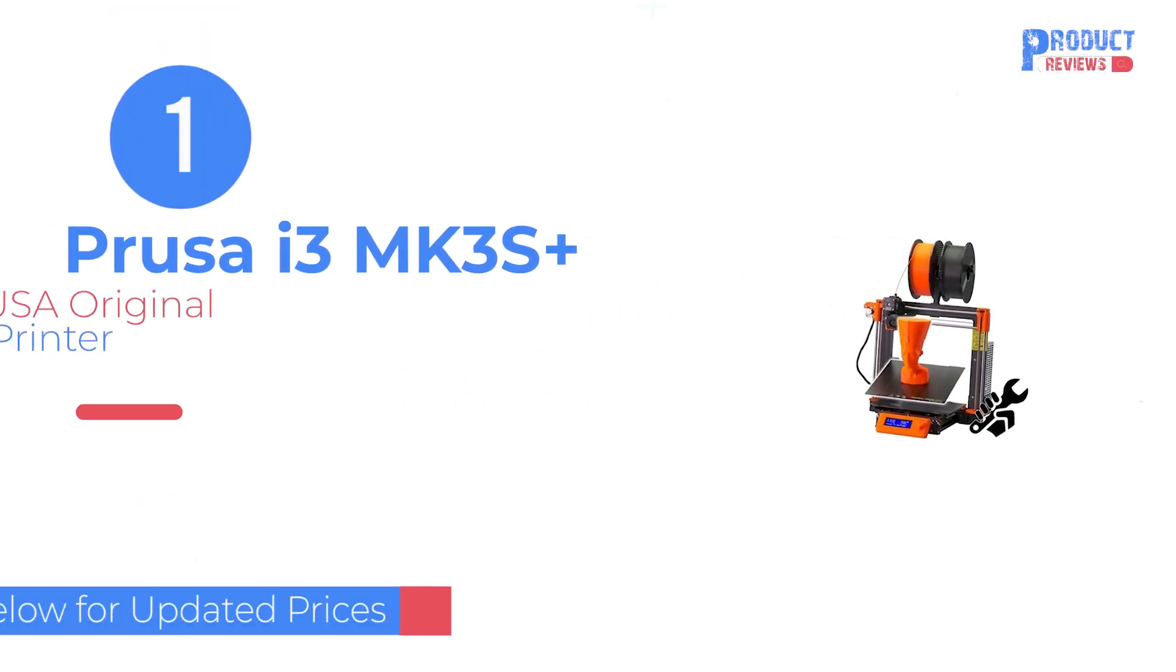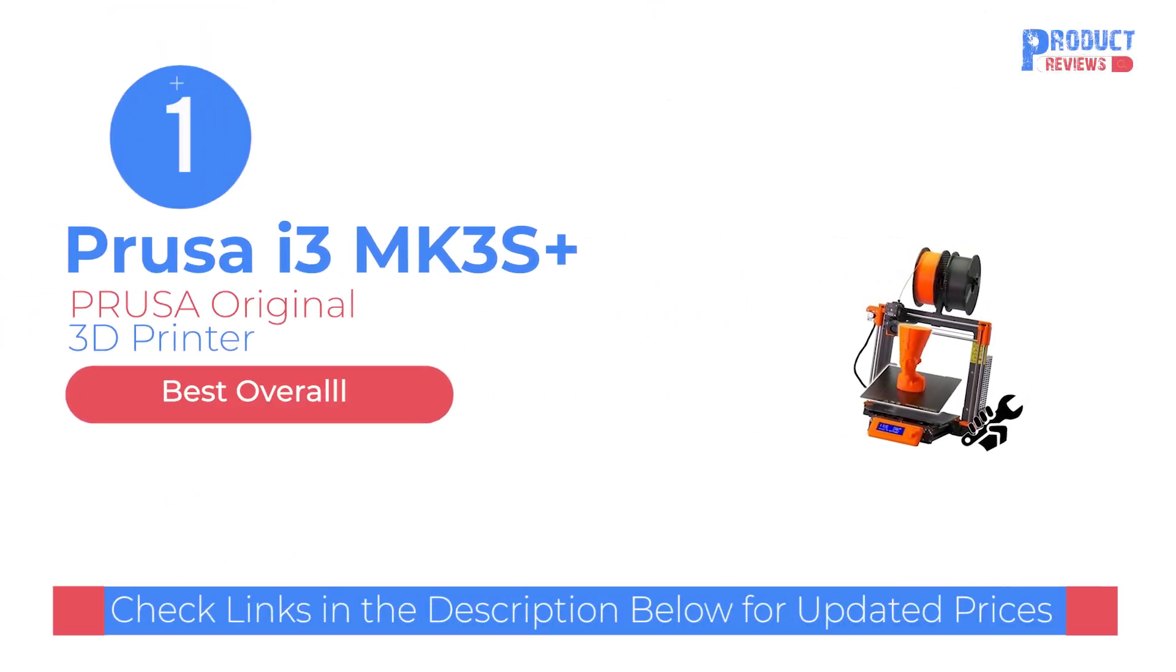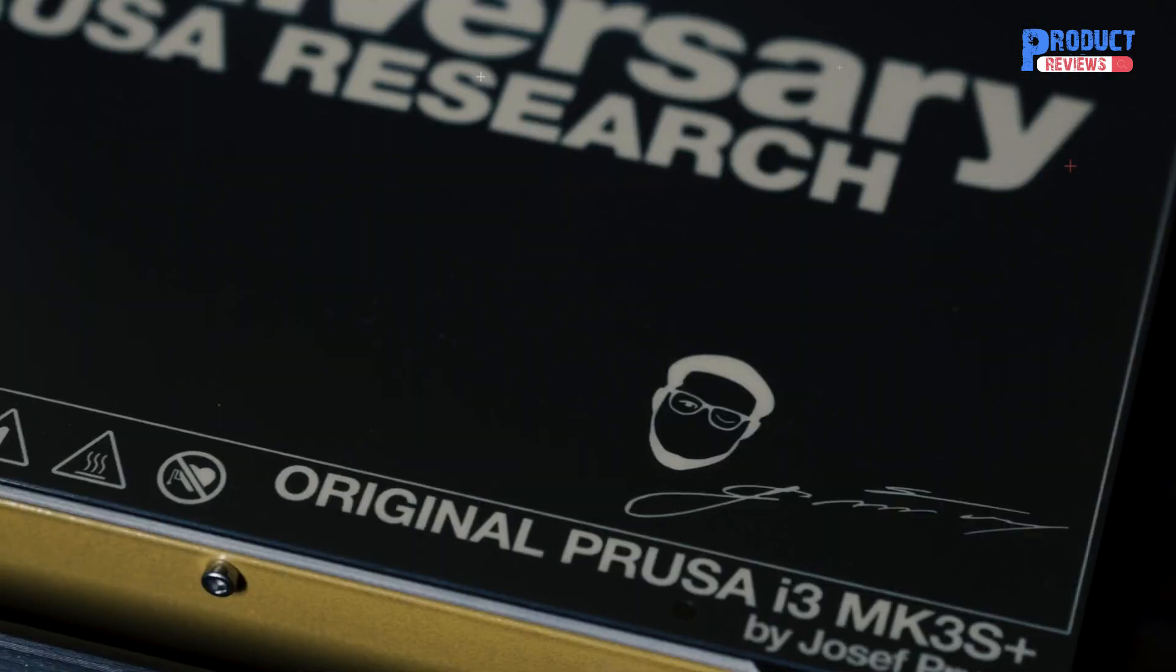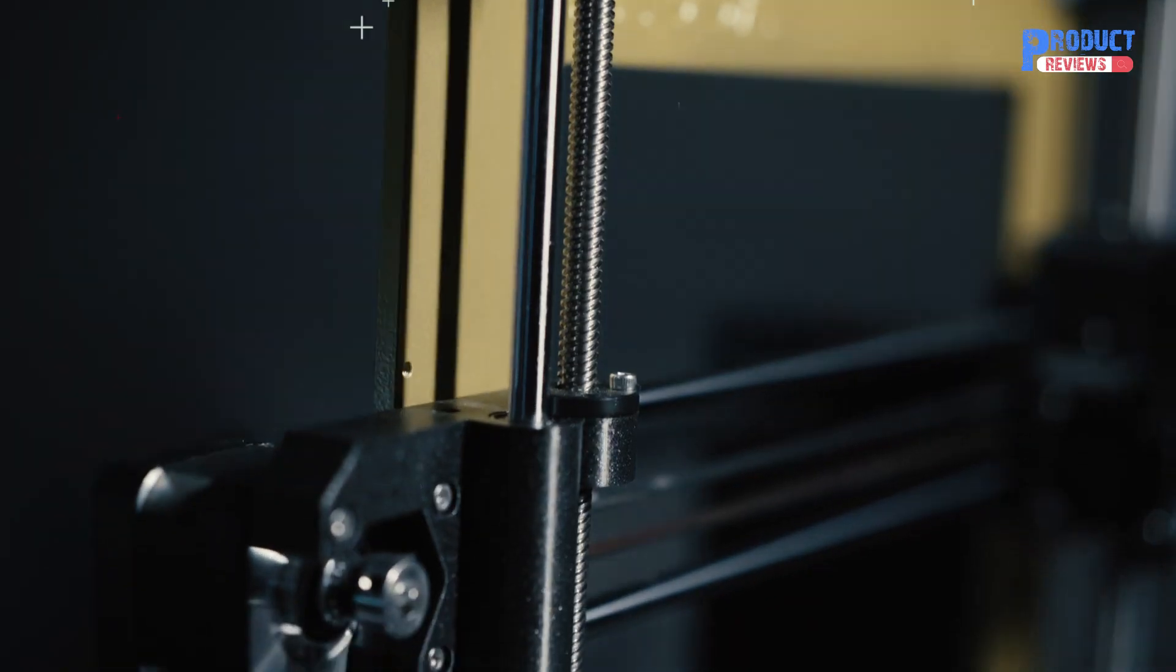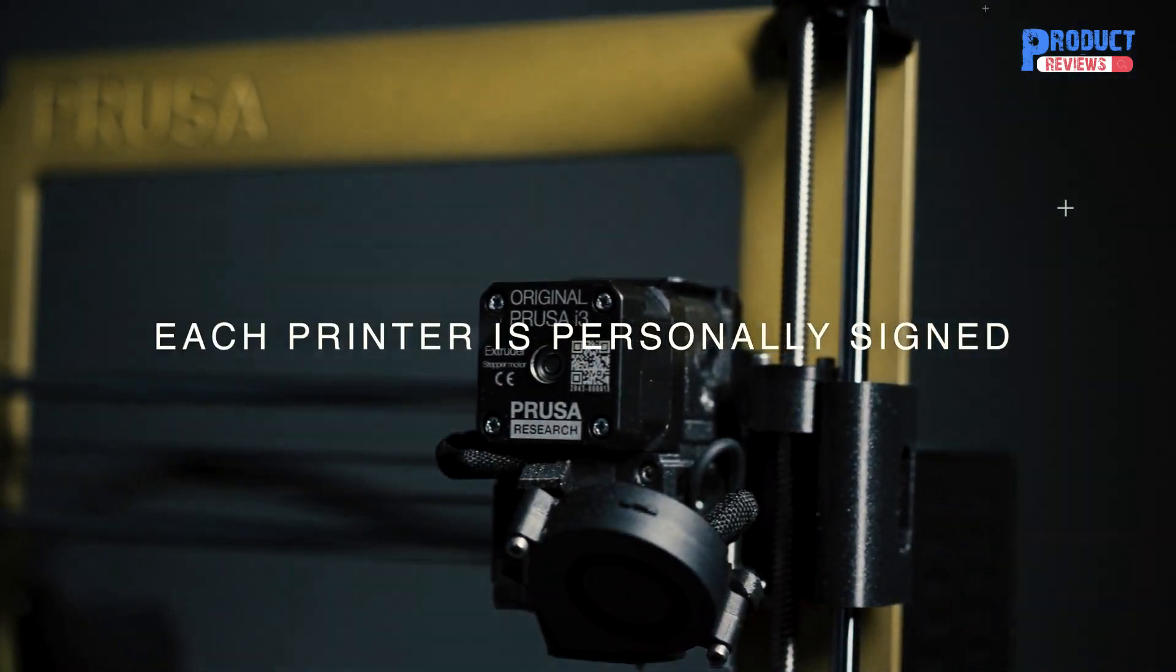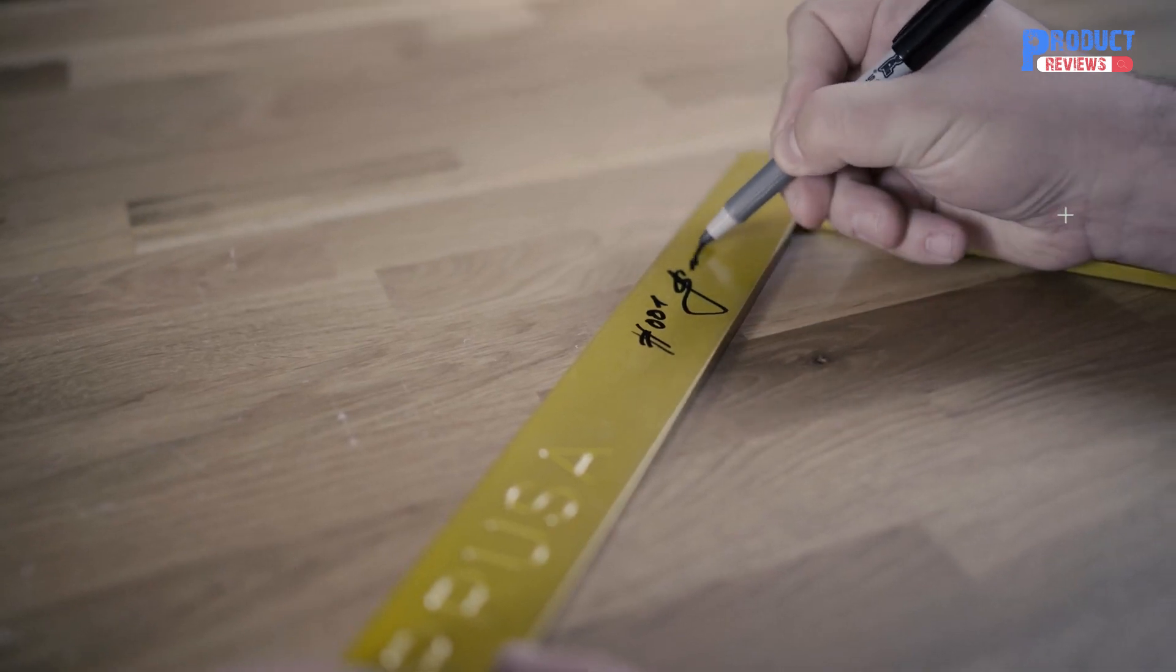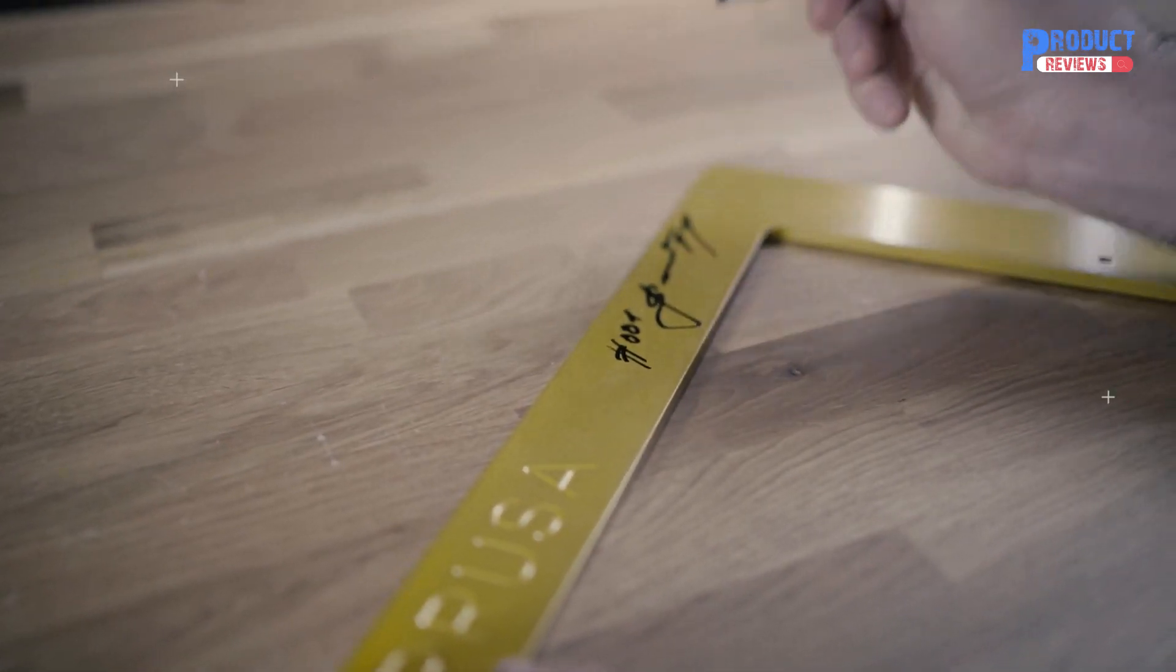Our recommendation number 1 is Prusa Original Prusa i3 MK3S Plus 3D Printer. The original Prusa i3 MK3S Plus, the latest iteration of Prusa Research's flagship 3D printer, adds sturdier parts and an improved print bed leveling system to an already fine-tuned machine.